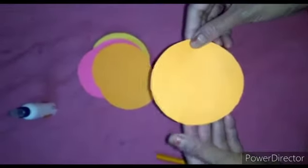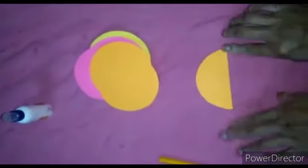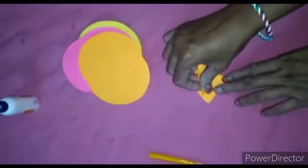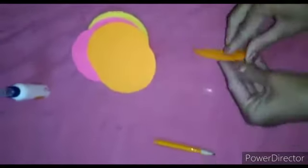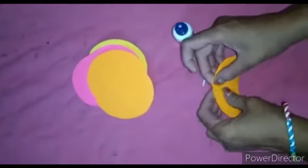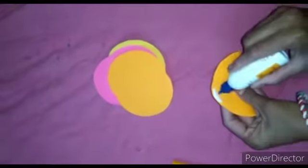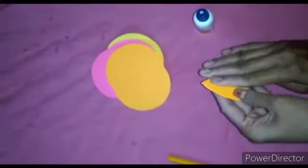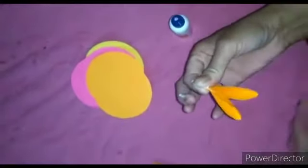Take one circle of origami paper, fold it properly like this. And from this corner to this corner fold like this. Now open it. And apply glue over here and stick like this. See, only this much we have to stick. After that apply glue only on this side and stick like this. See, these two parts are open. It should be like this.